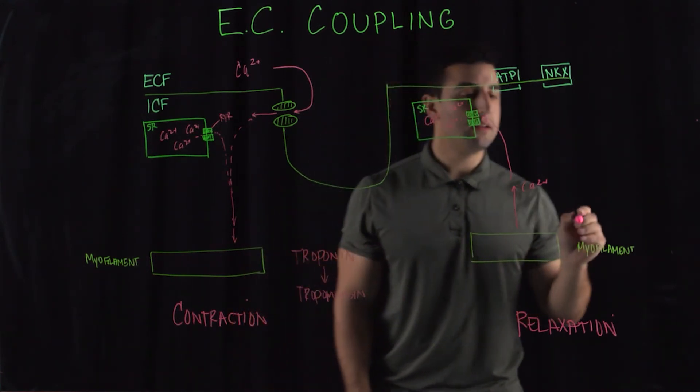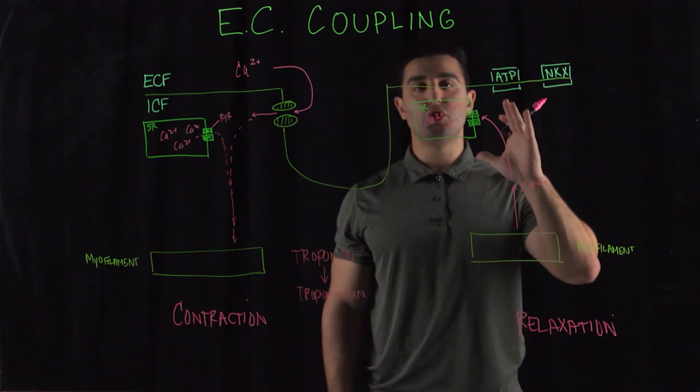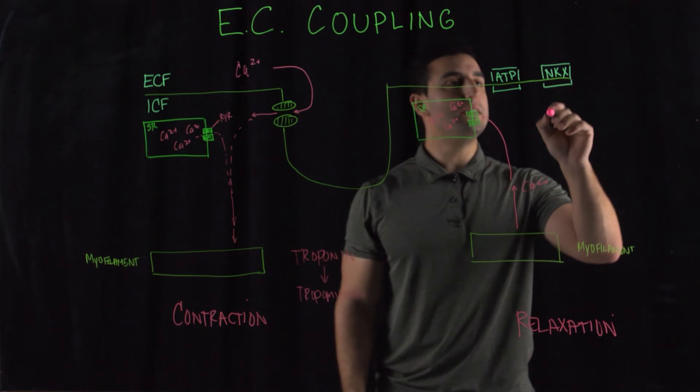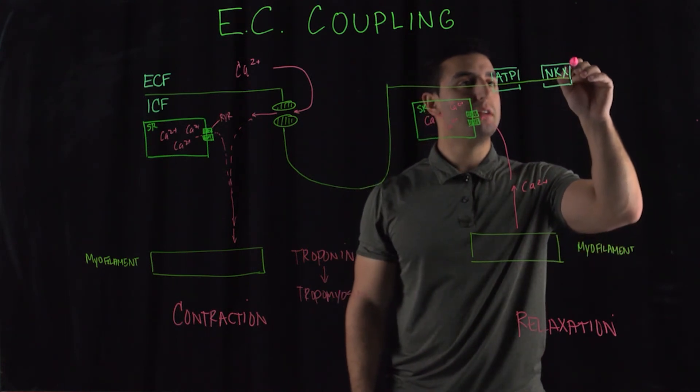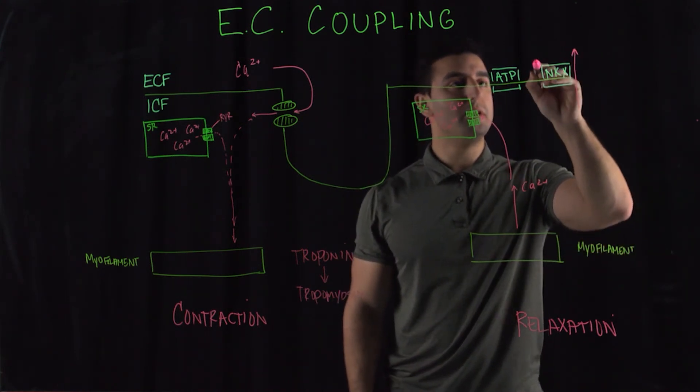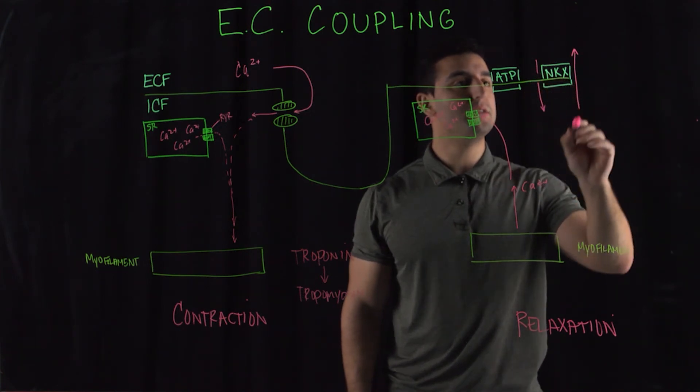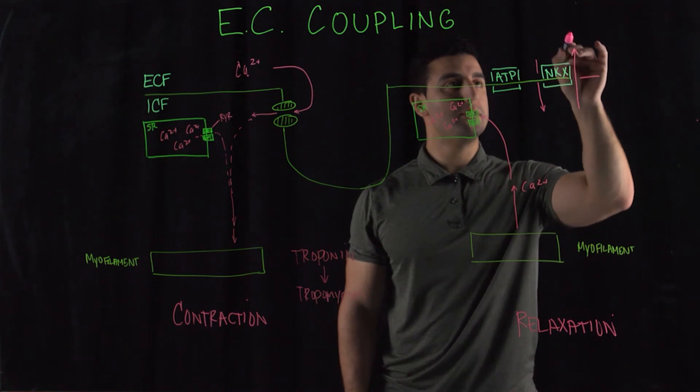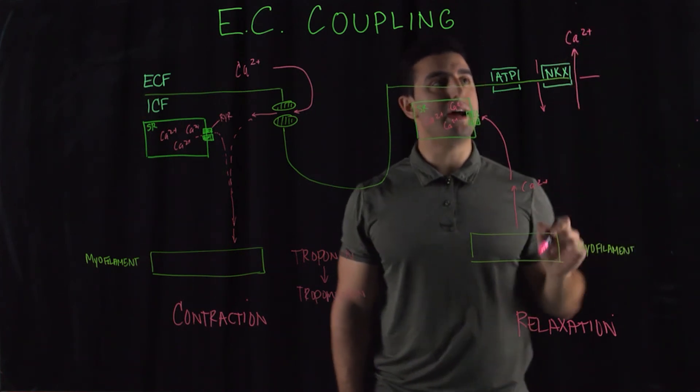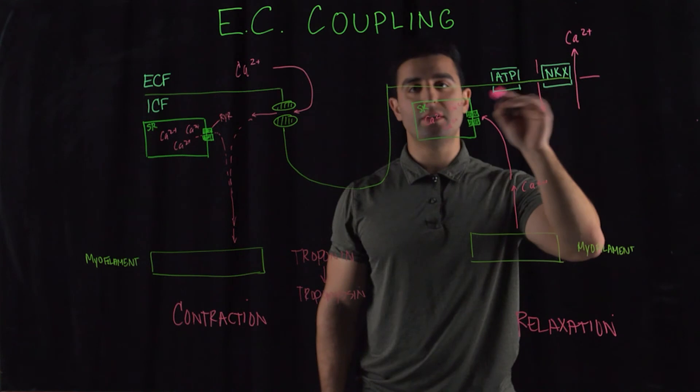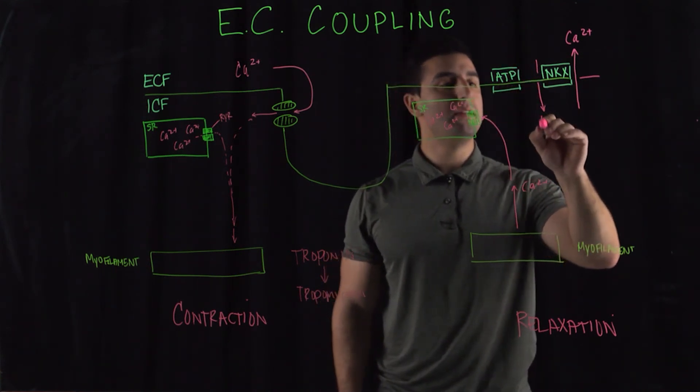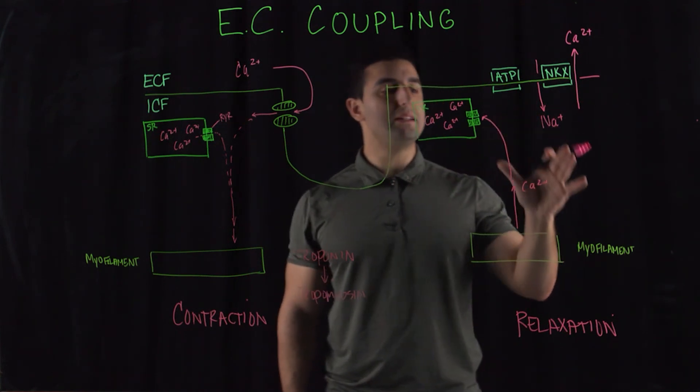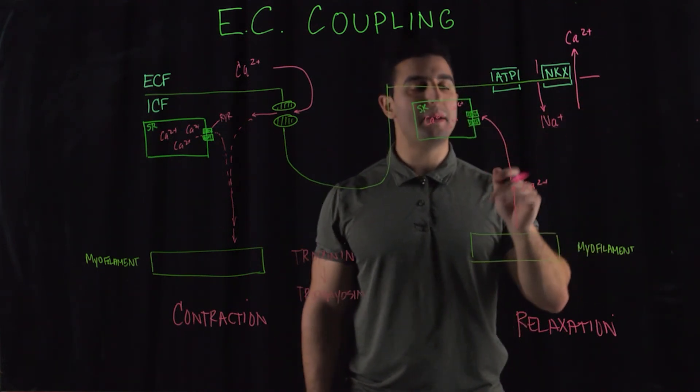The remaining calcium gets shunted outwards back into the extracellular fluids with these antiport channels. You have these calcium-sodium antiport channels where the calcium goes out, Ca2+ comes out, and you have these sodium molecules that are in the extracellular fluid that comes in. This allows for the maintenance of a homeostatic balance for calcium.